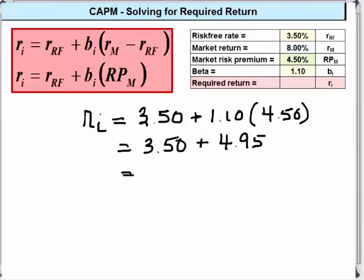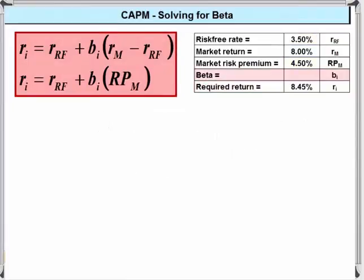Adding, we have our required return of 8.45. That was the easy way.